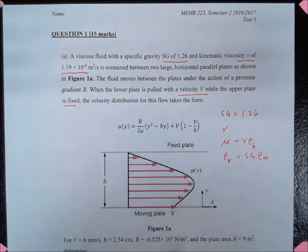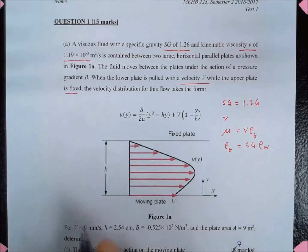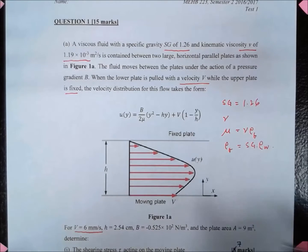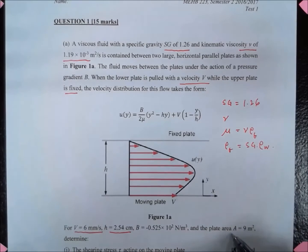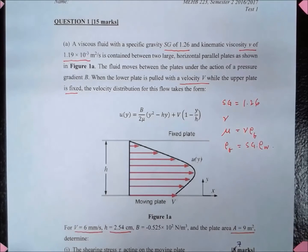Given that velocity V equals 6 mm per second, the distance between the plates h equals 2.54 cm, and B is a constant as given here. I think B is actually negative because the pressure gradient is actually negative, and the plate area is given to be 9 m².